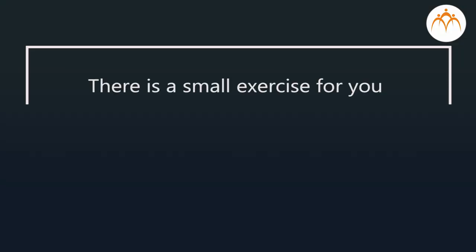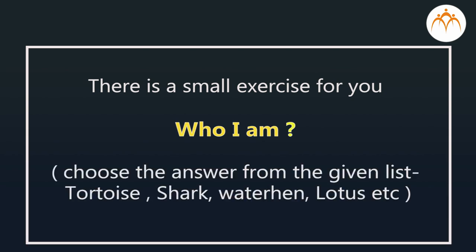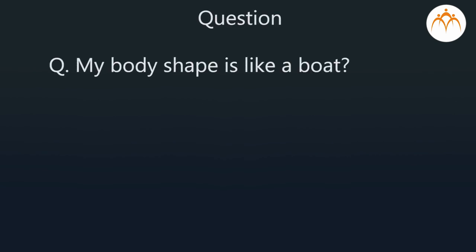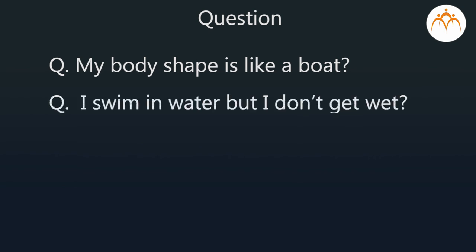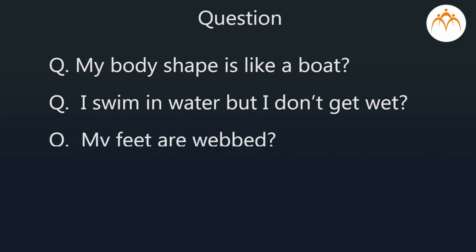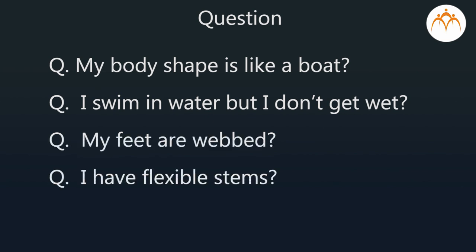So, students, you have studied in this video how plants and animals living in water adapt to their surroundings. Here is a small exercise for you — 'Who am I?' Choose the answer from the given list: tortoise, shark, water, hen, lotus, etc. Question 1: My body shape is like a boat. Question 2: I swim in water but I do not get wet. Question 3: My feet are webbed. Question 4: I have flexible stems.